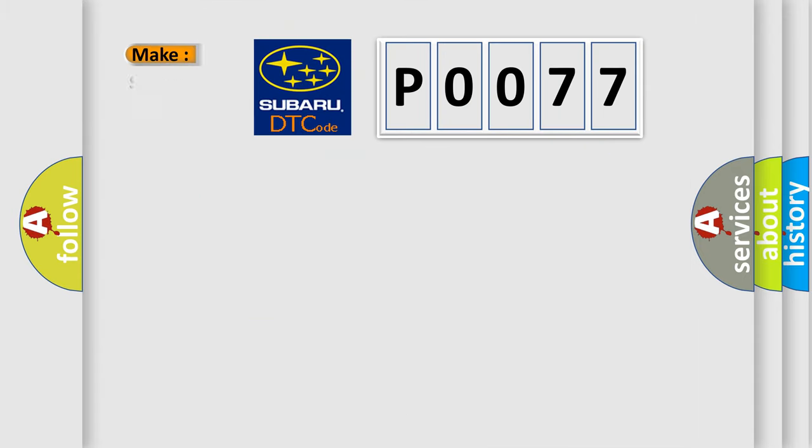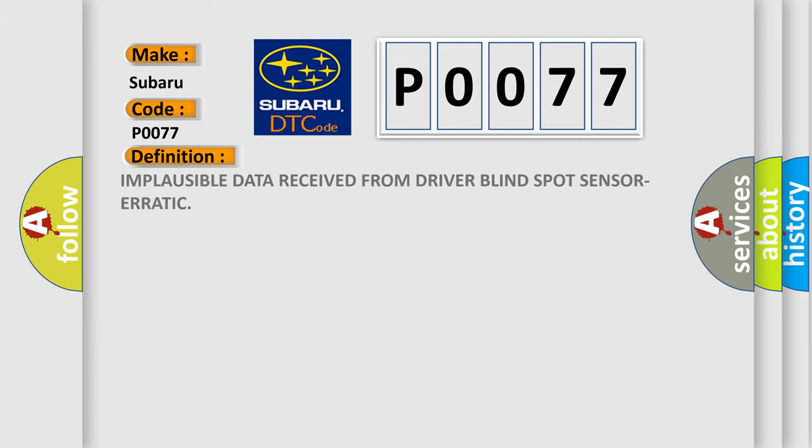So, what does the Diagnostic Trouble Code interpret specifically for Subaru car manufacturers? The basic definition is implausible data received from driver blind spot sensor erratic.